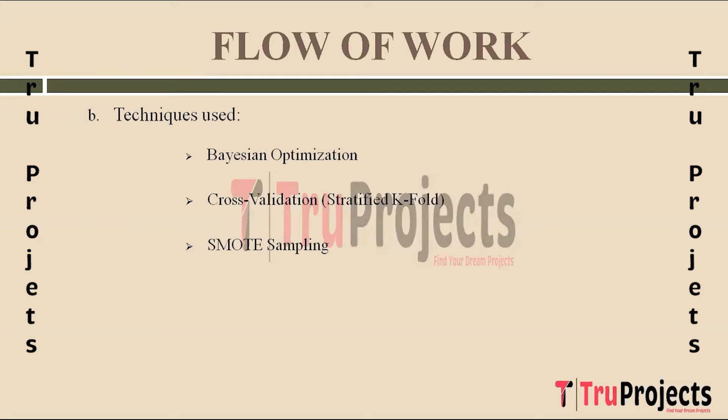SMOTE (Synthetic Minority Oversampling Technique) is used to tackle the class imbalance issue in fraud detection. With the majority of transactions being legitimate, SMOTE creates synthetic samples within the minority class (fraudulent transactions) by generating new data points between existing ones. This rebalancing enhances the model's capability to identify fraudulent activities. LGBM, XGBoost, and CatBoost were trained using this technique.